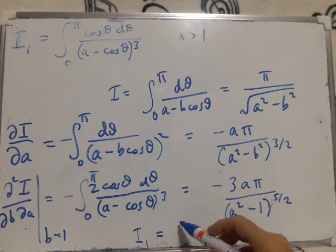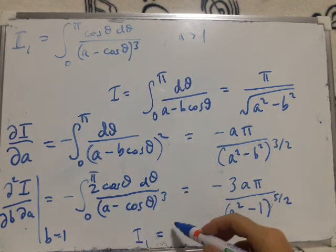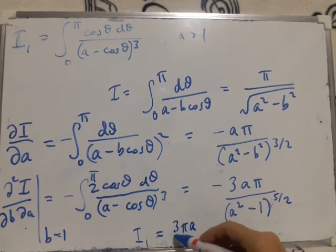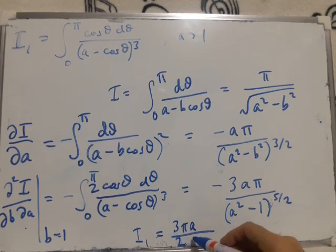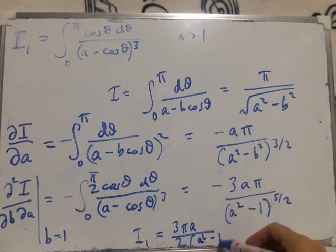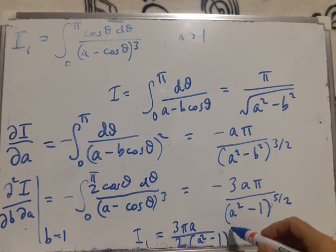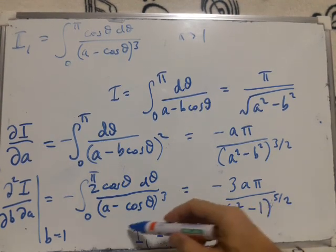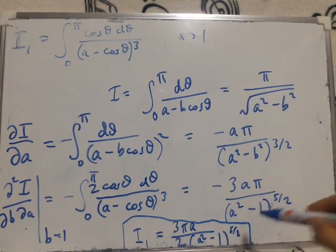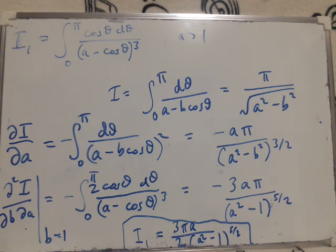And then I see I get the integral I want. So that means finally, I₁ is equal to just divided by minus two, so I get 3πa over 2(a² - 1)^(5/2) as the final answer.